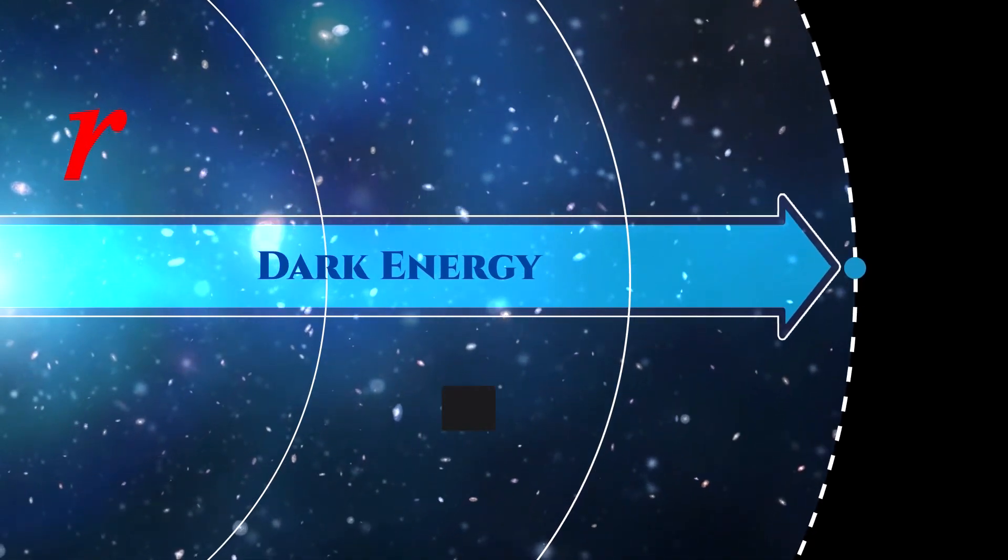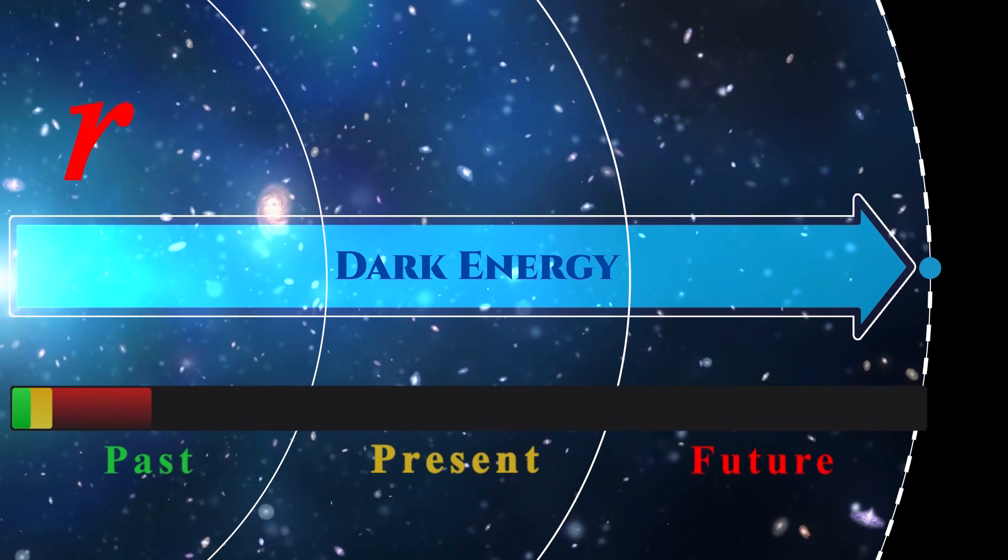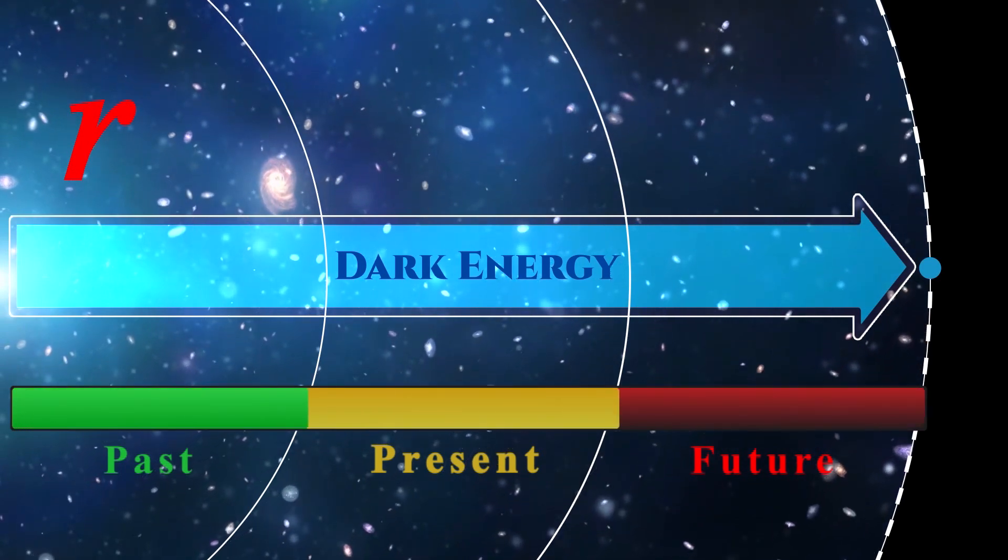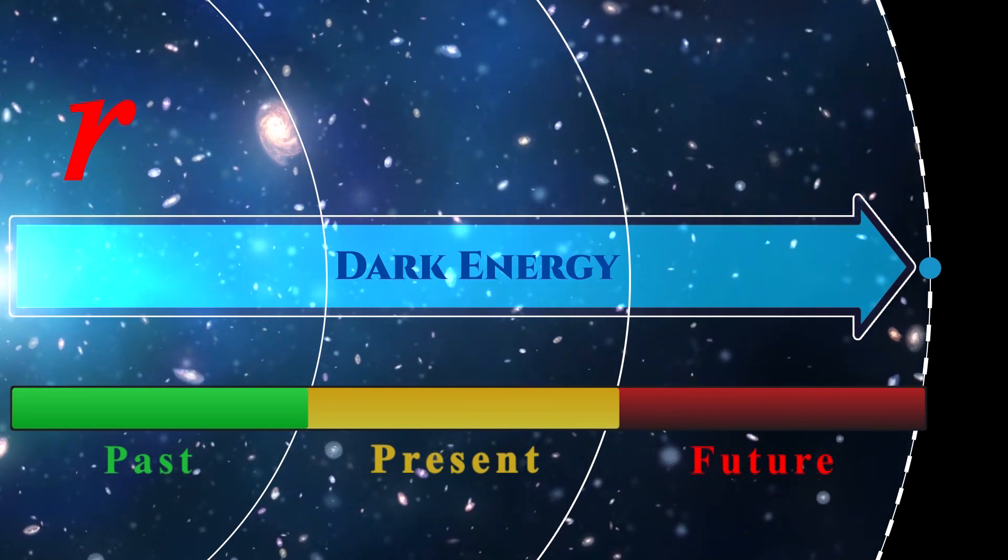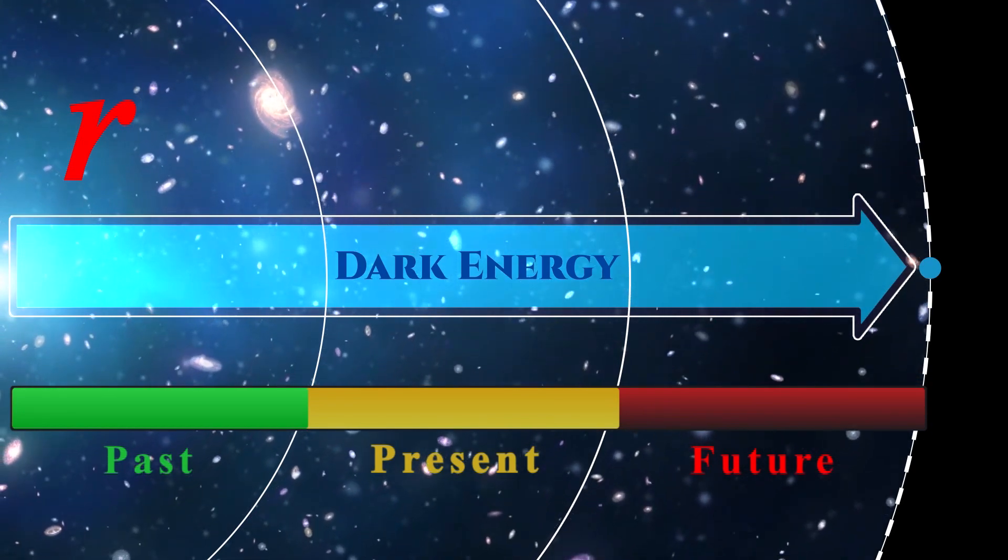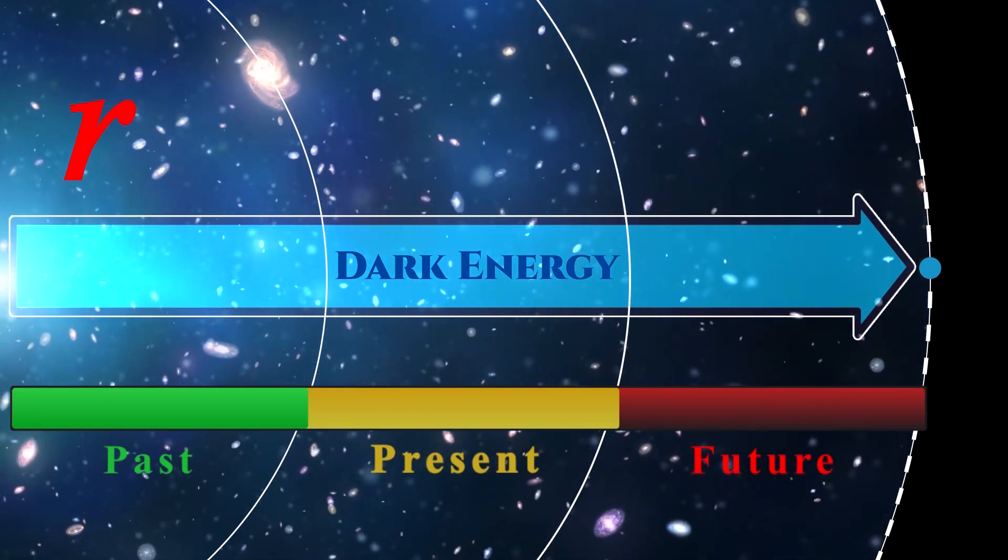We must remember that the dark energy and initial energy have been contiguous, have always been and always will be. Dark energy is actually the reduced initial energy that is continuous.